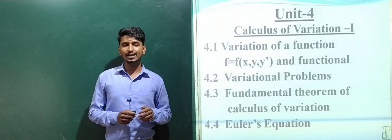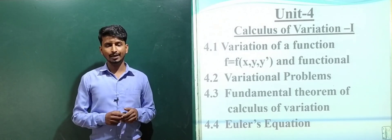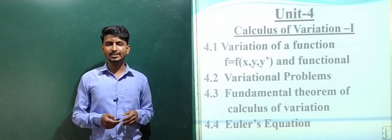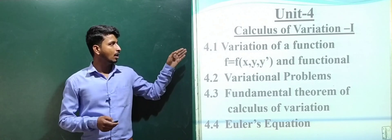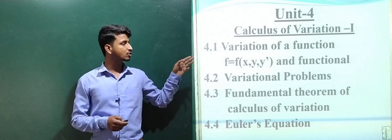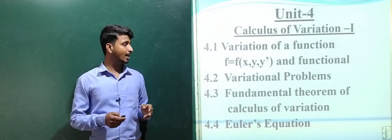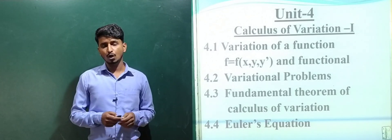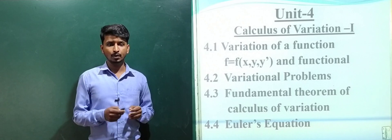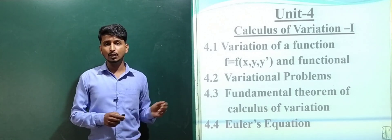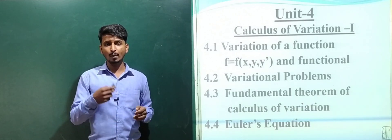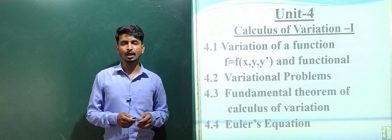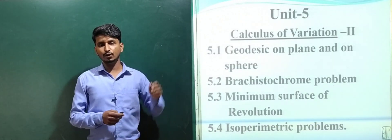Unit 4 is about calculus of variation — finding the maxima and minima of functionals, where functionals means functions of functions. Unit 4 starts with the variation of a function f = f(x, y, y') and functionals, variation problems, the fundamental theorem of calculus of variation, Euler's equation and forms of Euler's equation, and important problems related to Euler's equation and the fundamental theorem of calculus of variation.